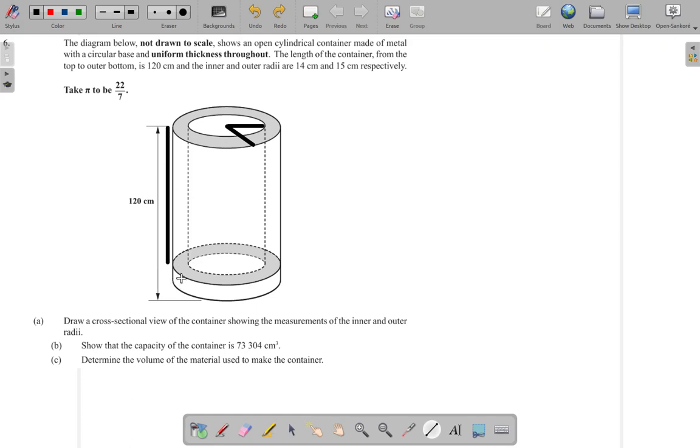Now what is this height down here? Let me look again. The diagram shows an open cylindrical container made of metal with a circular base and uniform thickness throughout. So this thickness, the difference between 14 and 15 is 1. That would imply that this height from the bottom of the container up to the base of the container, the thickness of the base, would be 1 centimeter as well, because you have uniform thickness throughout.